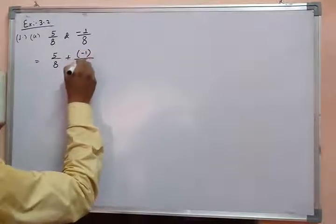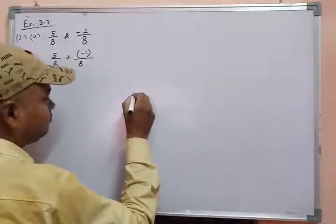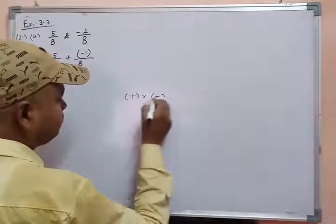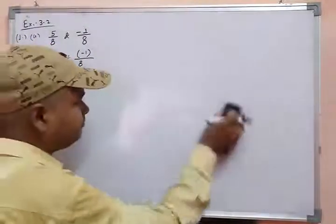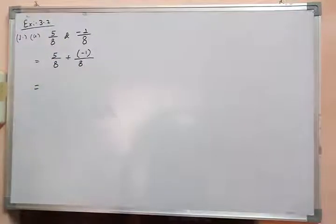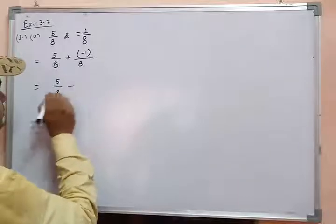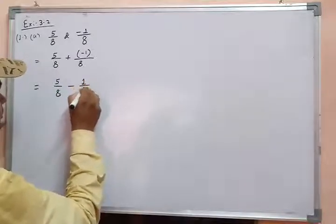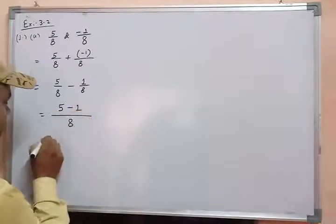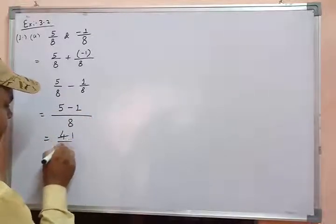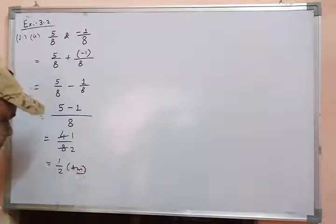So we have 5 upon 8 plus minus 1 upon 8. Remember that plus into minus equals minus. So it can be written as 5 minus 1 upon 8, which gives 4 upon 8. Simplifying, the answer is 1 upon 2.